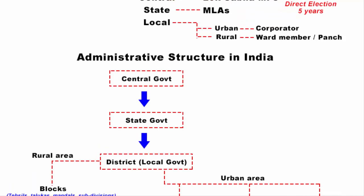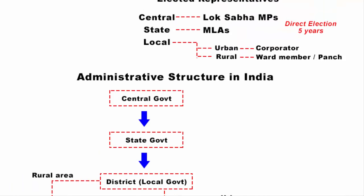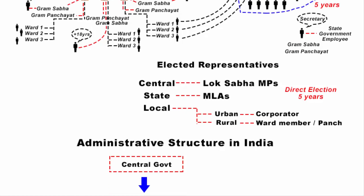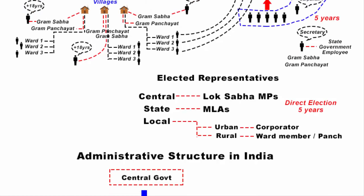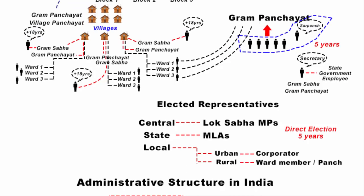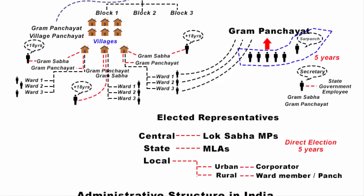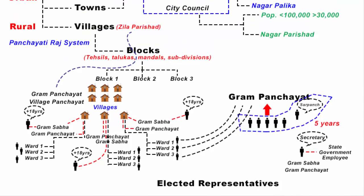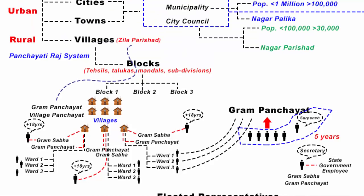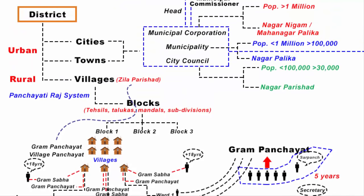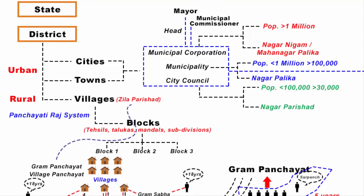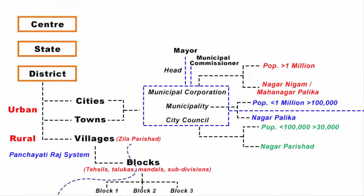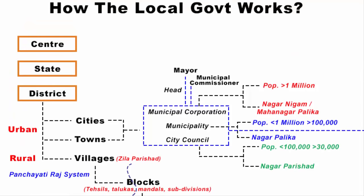So this is the entire administrative structure of India in brief. The aim of this video was to explain the entire structure of local government in India, going through everything in detail in a step-by-step manner. I hope you now understand what local administration and government bodies look like at various levels. Let me know your thoughts in the comment section — thanks for watching and I'll see you in the next one.